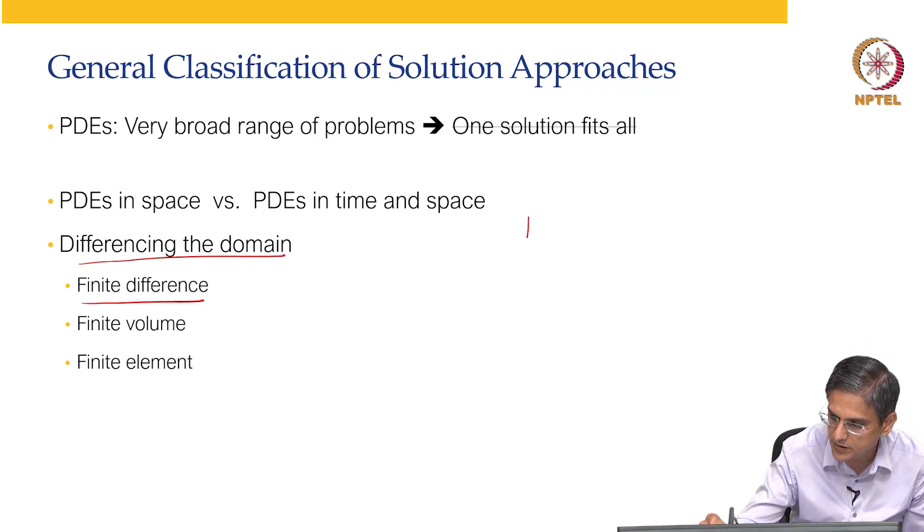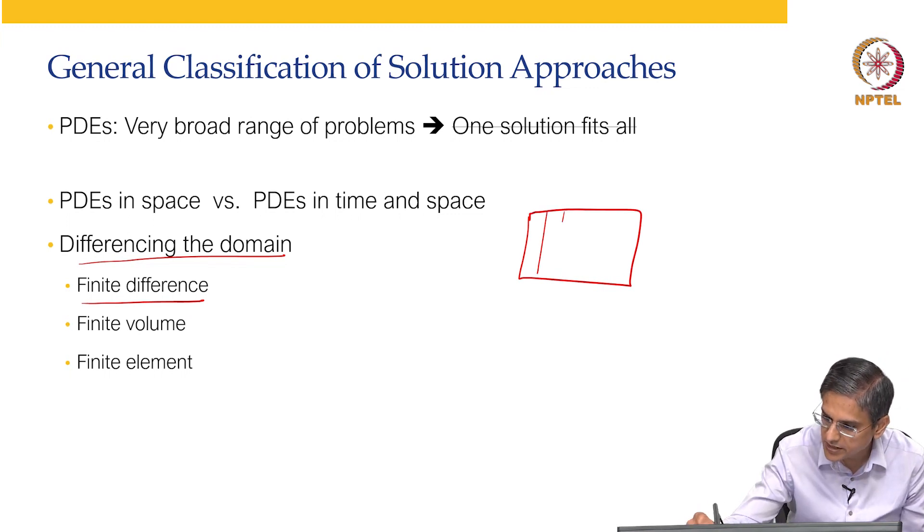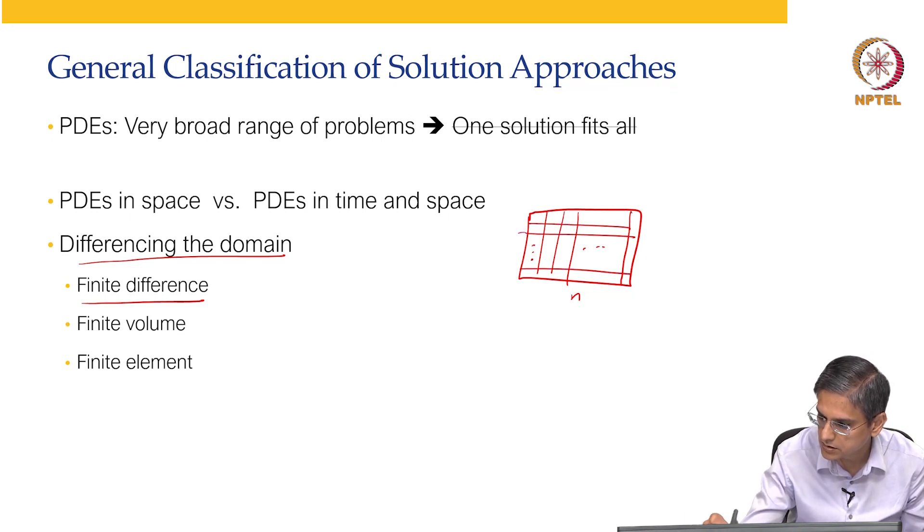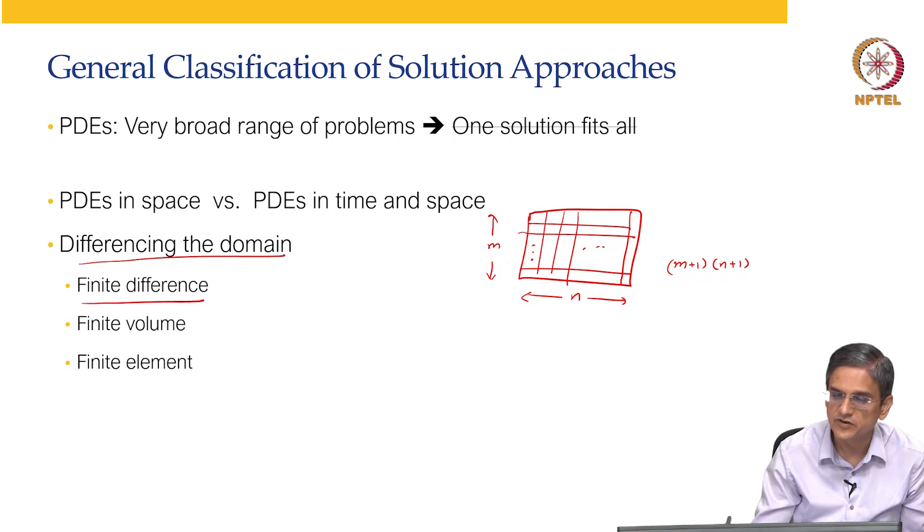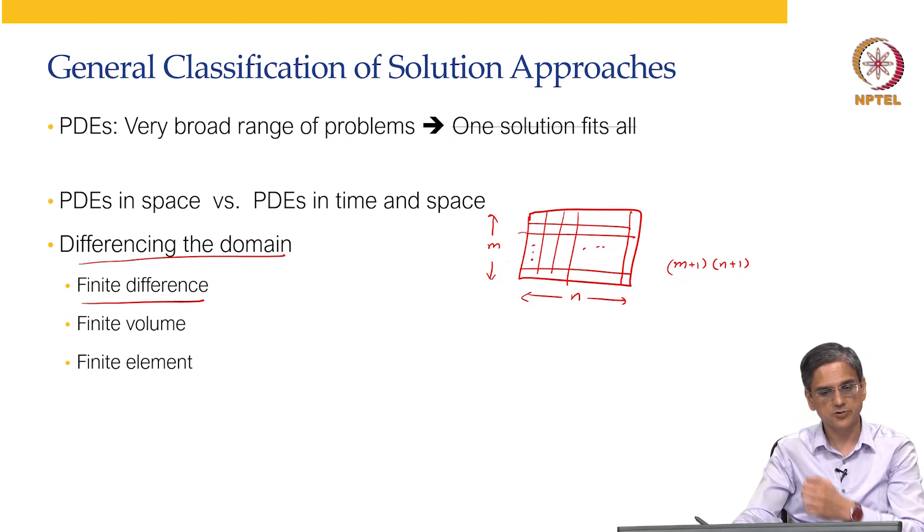For example, if you have PDE in this grid, we can distribute this into n number of domains here and n number of domains over here. So, you will get m plus 1 multiplied by n plus 1 number of variables. So, these are the large number of variables that you will get that you can solve using any of your numerical solution approaches.